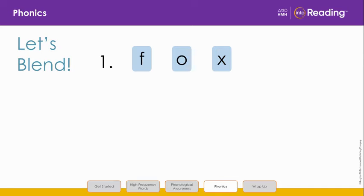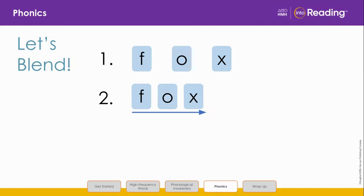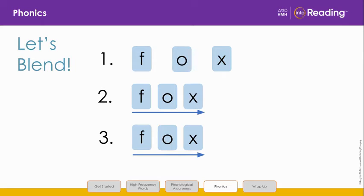Let's do another word. Ready? We are going to blend the letters in line 1 to read a word. Say the letters and sounds with me: F, F, O, AH, X, X. It's another CVC word. Let's slide the letters F, O, X close together to form the word in line 2. Now look at line 3 and blend the word with me: F, AH, X — FOX. Nice work!